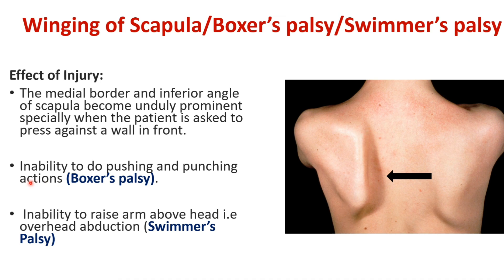The person will not be able to perform pushing and punching actions — that is why the condition is also known as boxer's palsy, because the person cannot punch. Additionally, there is inability to raise the arm above the head — that is, overabduction is not possible — and protraction is not done. These movements are needed for swimming, which is why the condition is also known as swimmer's palsy.